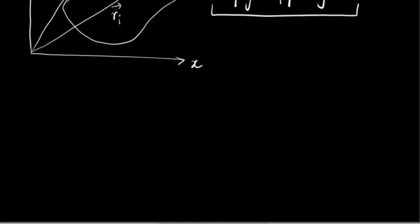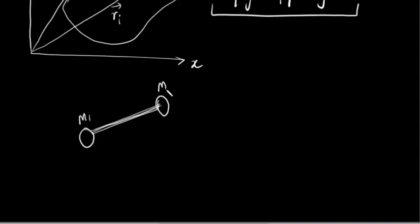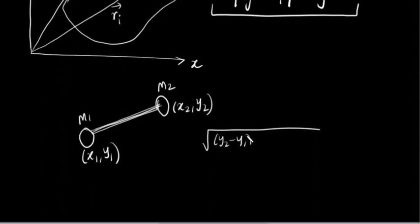Another constraint is that of a dumbbell system — a rigid rod connecting two masses m1 and m2. If m1 has coordinates (x1, y1) and m2 has coordinates (x2, y2), then the fixed distance between them gives: (y2 − y1)² + (x2 − x1)² = constant. This is another holonomic constraint of the same form.